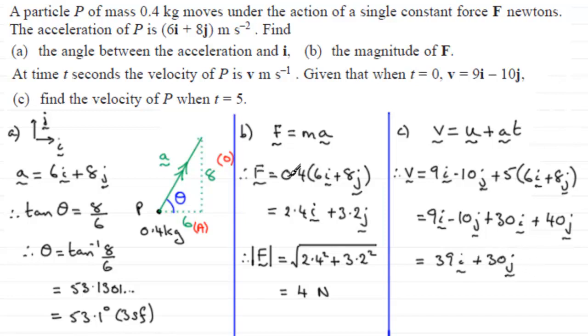Now, it does say find the velocity of P, not the speed of P. If it were to say find the speed of P, then I'd need to go on and work out the magnitude of this velocity by using Pythagoras' theorem, which would be the square root of 39 squared plus 30 squared. But no, it says find the velocity of P, so that's where it stops. I'm going to write this in brackets though, and put the units as meters per second.